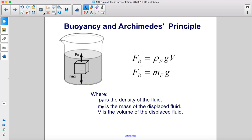The buoyant force equals rho sub f g v and the buoyant force equals m sub f g, where rho sub f is the density of the fluid, m sub f is the mass of the displaced fluid, and v is the volume of the displaced fluid.